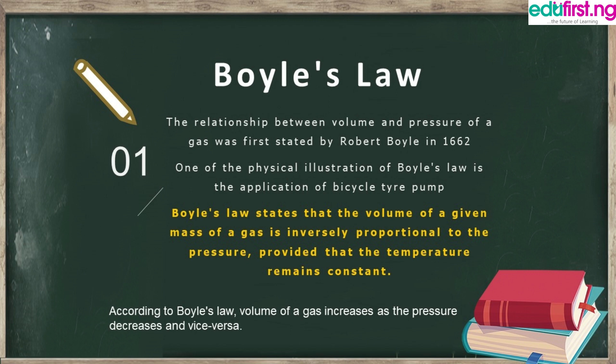One physical illustration of Boyle's Law is the application of a bicycle tire pump. When using a bicycle tire pump, the increase in pressure leads to a reduction in volume. You can also see this in the diagrammatic illustration: in the first vessel, the piston was not applied, so we had an increase in volume, while in the second vessel where the piston was applied — meaning increased pressure — we see a reduction in the volume of the gas.